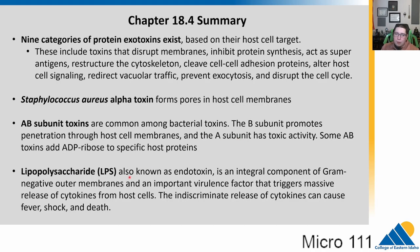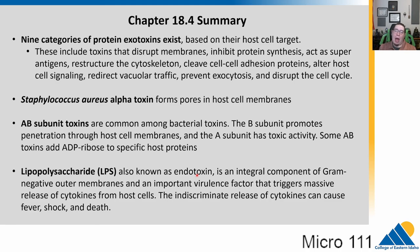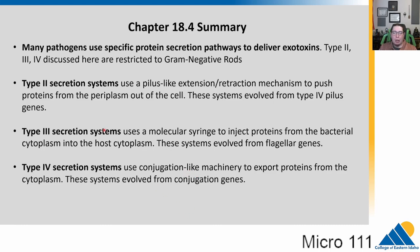To summarize section 18.4: Staphylococcus aureus alpha toxin creates pores causing hemolysis. The AB toxin mechanism — particularly the cholera toxin example — involves ADP ribosyl transferase activity. Lipopolysaccharide is an endotoxin; when gram negatives die, they release LPS which can overstimulate the immune system. For secretion systems: type 2 is related to pili, type 3 — the molecular syringe — is related to flagella, and type 4 is related to the conjugation system. That's it for 18.4.